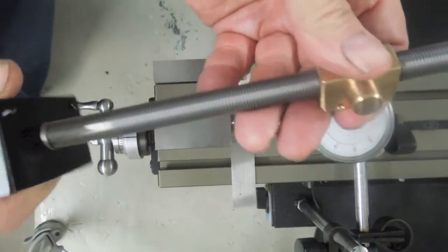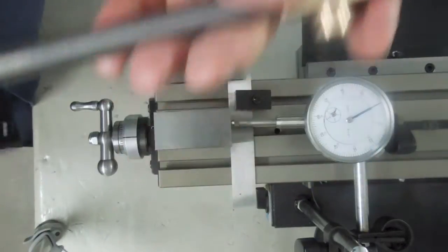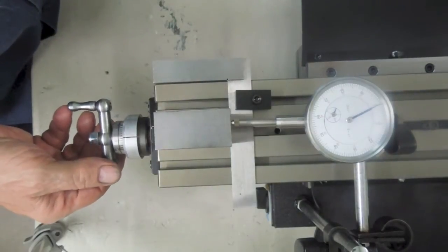Now in order for it to do that, it has to have some clearance. If we didn't have clearance, it wouldn't move. That's where this slop comes from. So we've got about 1,000, maybe 1,000th and a half here.